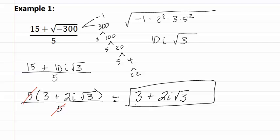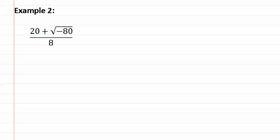Let's look at example two. Once again, we need to start by simplifying the radical, where we have negative eighty.